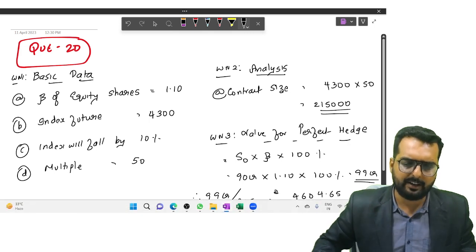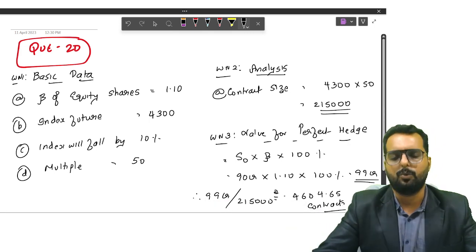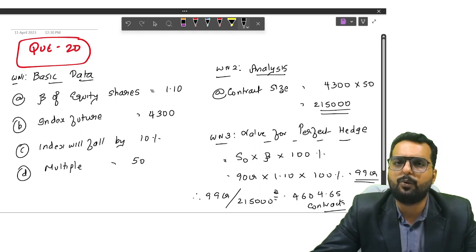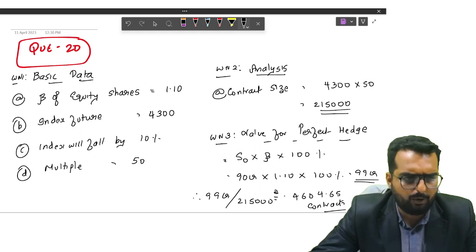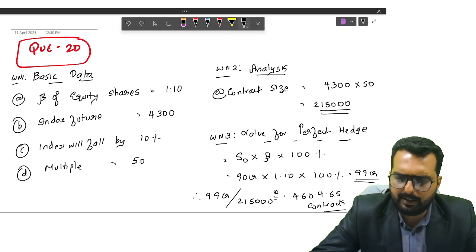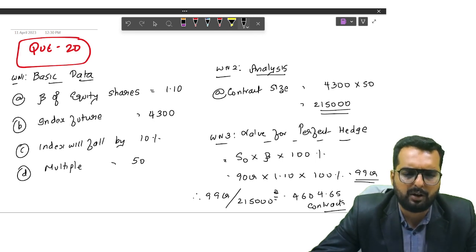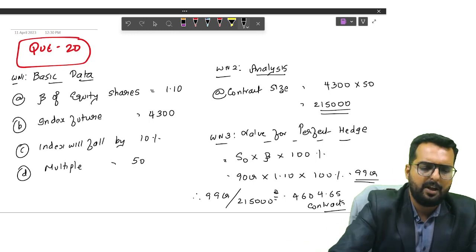Therefore, 99 crore divided by 2,15,000 will give you the number of contracts. You will get the answer as 4,604.65 contracts. In reality, can we enter into this many number of contracts? No. In reality, we can either enter into 4,605 or 4,604. So, we are done with basic data and analysis, and we have got the perfect hedging.